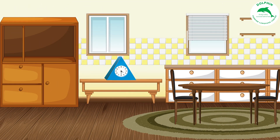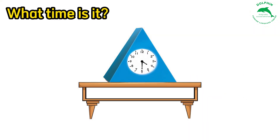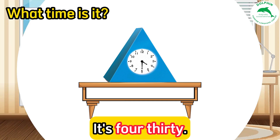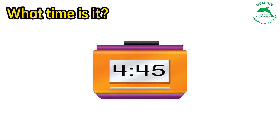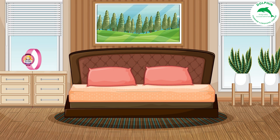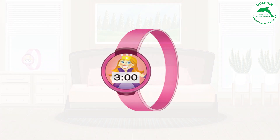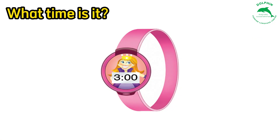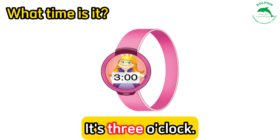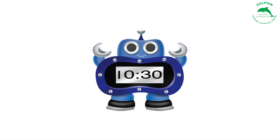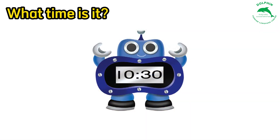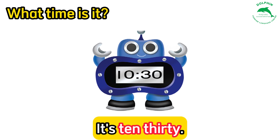Three: What time is it? It's four thirty. Four: What time is it? It's four forty-five. Five: What time is it? It's three o'clock. Six: What time is it? It's ten thirty.